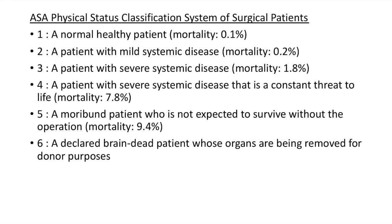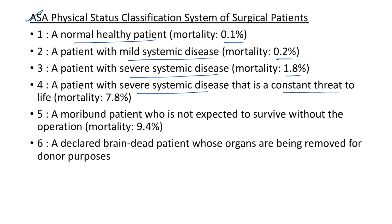ASA physical status classification is used for surgical patients. ASA stands for American Society of Anesthesiologists. ASA 1 is a normal healthy patient with mortality risk of 0.1%. ASA 2 is a patient with mild systemic disease with mortality of 0.2%. ASA 3 is severe systemic disease with mortality of 1.8%. ASA 4 is severe systemic disease that is a constant threat to life with mortality of 7.8%. ASA 5 is a moribund patient not expected to survive without the operation with mortality of 9.4%.